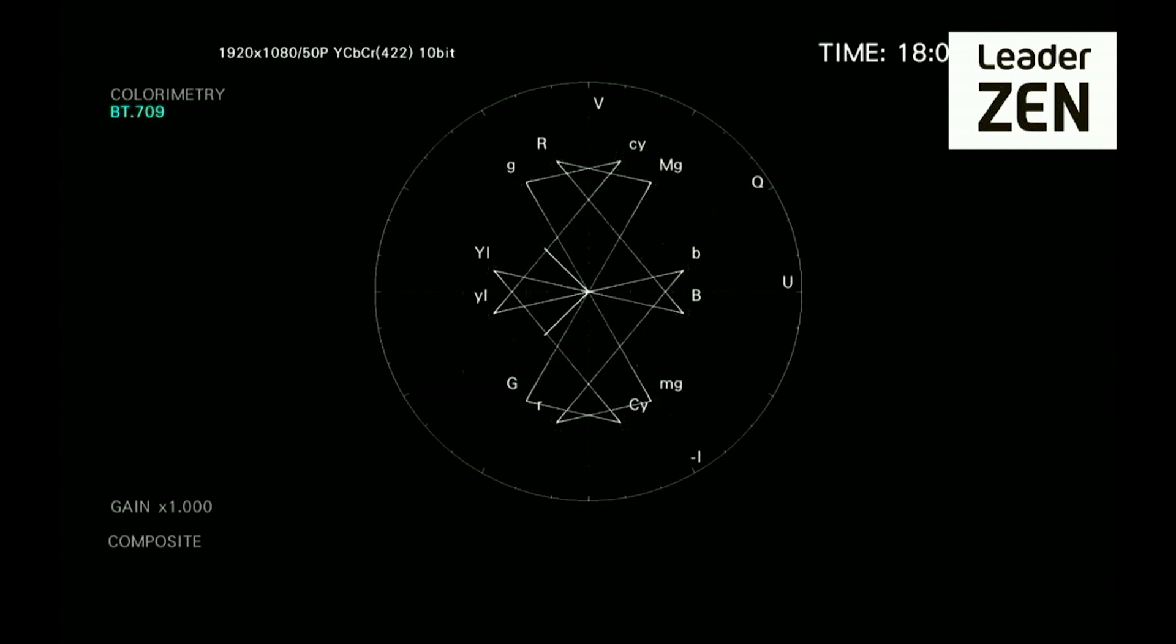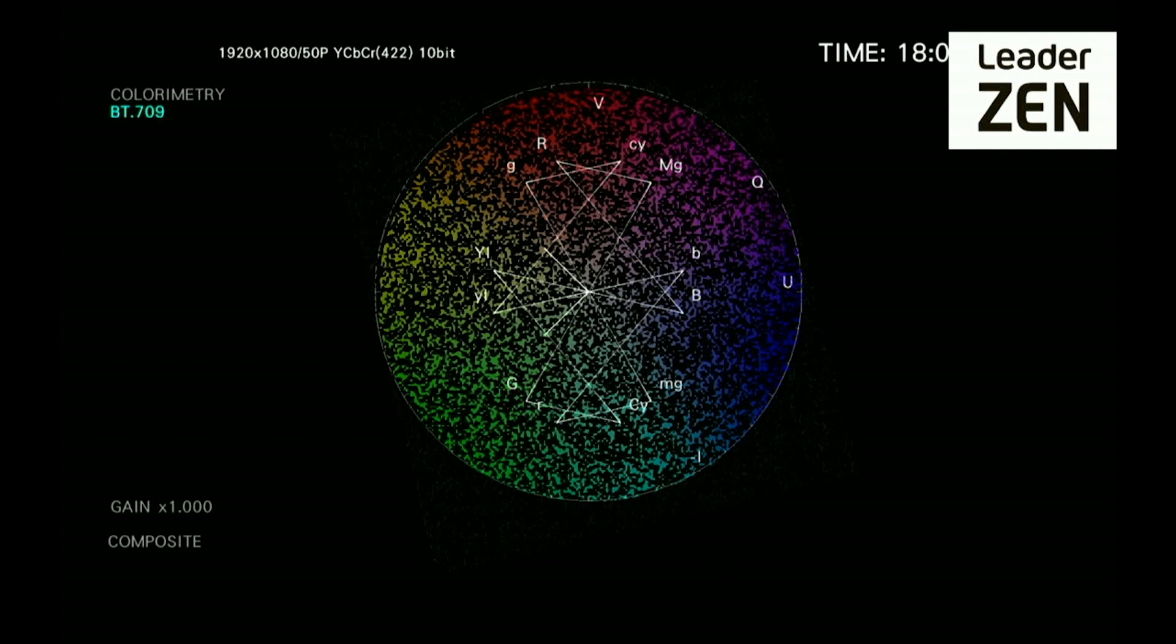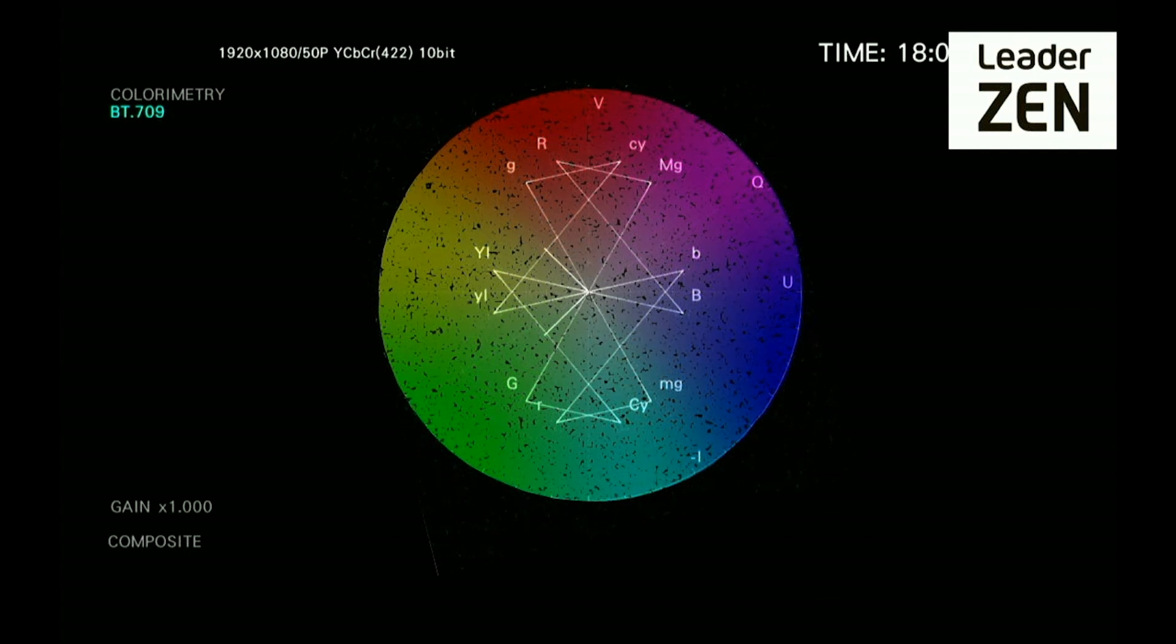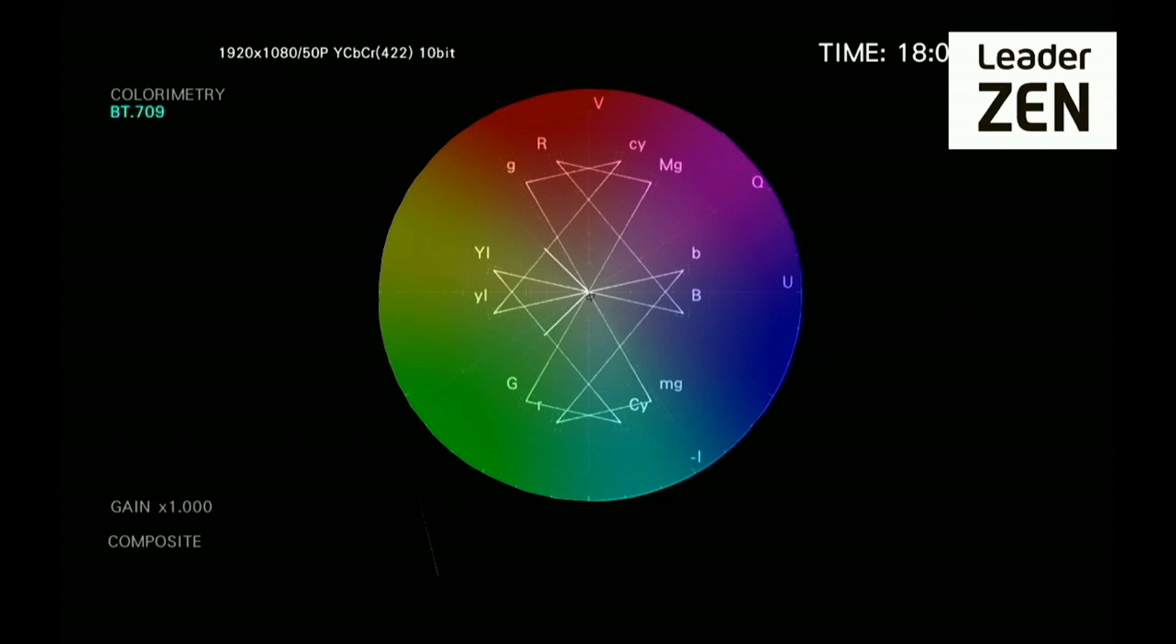Video is comprised of three color components: red, green, and blue (RGB). The RGB color model is an additive color model in which red, green, and blue light are added together in various ways to reproduce a broad array of colors.